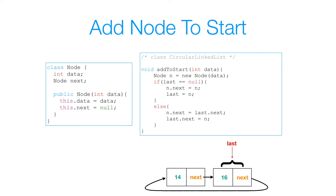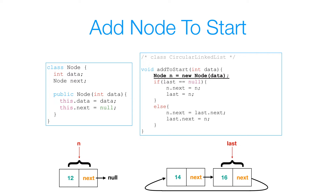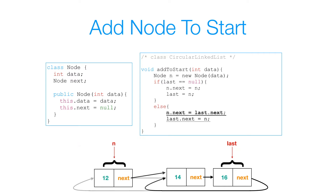Here's the solution. I called my method addToStart. It takes in some argument data, creates a node, and inserts that node in the front of the list. For a circular linked list, the front is last.next's position. First I create the node. Then I check if last is null — if so, I set n.next to n and set last to n. Otherwise, I set n.next to last.next, then set last.next to n. That's how we add a node to the start of a list.